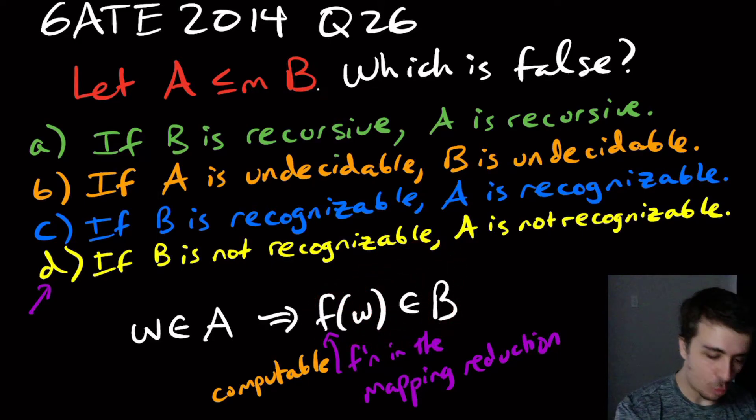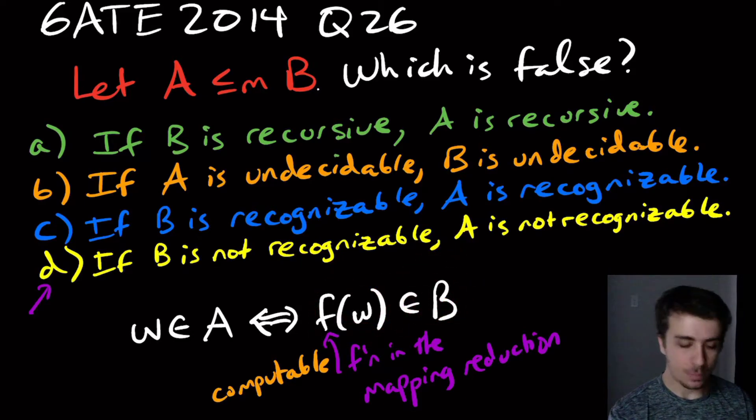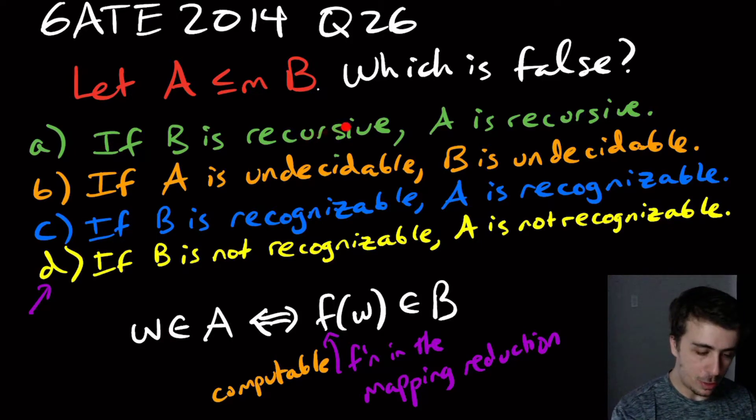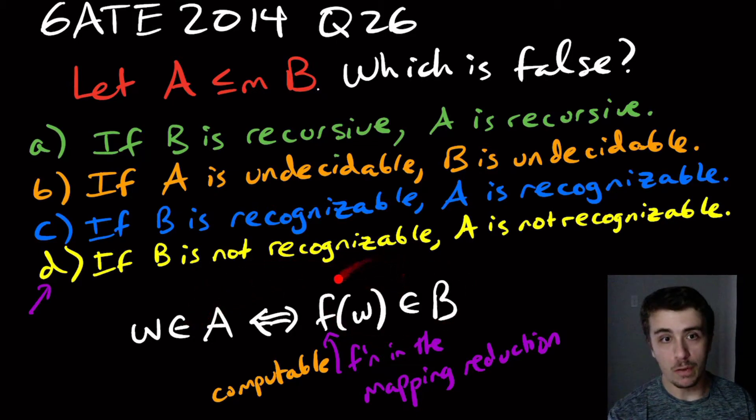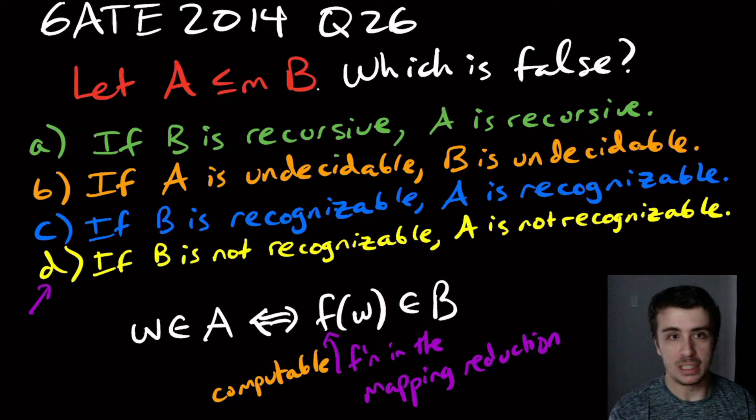So if I wanted to decide A, well, I have no idea how to. So what I do is I take this W, whatever it is, I don't know whether it's in A or not, then I compute the value F over here, F of W, and then I run the decider for B. But the key thing is one thing I left out, which is this backward arrow here. So the answer of whether W is in A is exactly the same as whether the computed value is in B. So this is really useful because if I just run the B decider, the answer is exactly the same as for A, and then we're done.